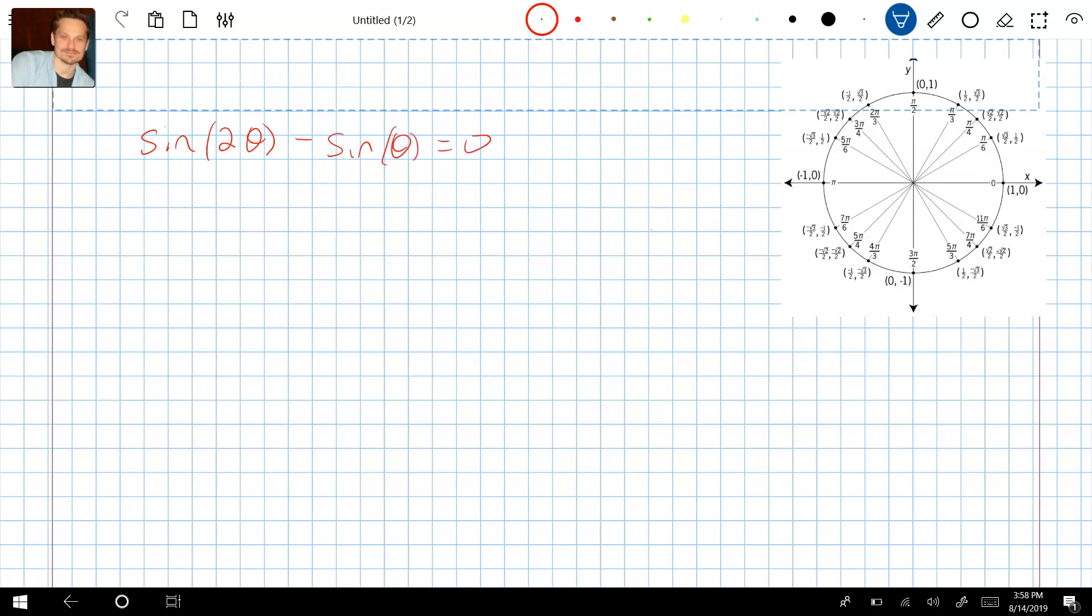Here, there isn't really much we can do because, for example, sin(2θ) and sin(θ) have different arguments. 2θ is not the same as θ. It doesn't look like there's anything that can be factored either.